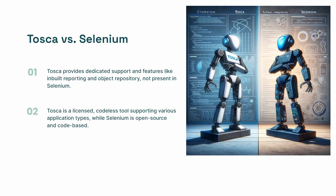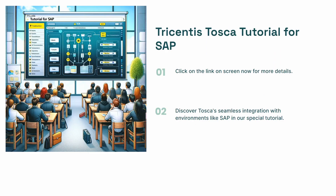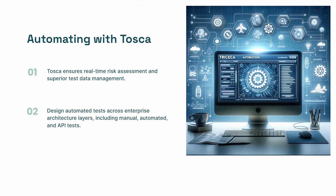In the Tricentis Tosca tutorial for SAP, you'll see how Tosca integrates into different SAP environments, offering quick feedback for Agile and DevOps. It is important to note that Tosca has been selected as the de facto SAP automation platform. With Tosca, you can design automated tests across all enterprise architecture layers, providing real-time risk assessment and superior test data management. Tosca's ability to simulate dependent systems behavior is crucial in interconnected application landscapes.